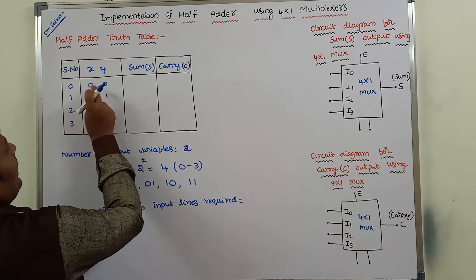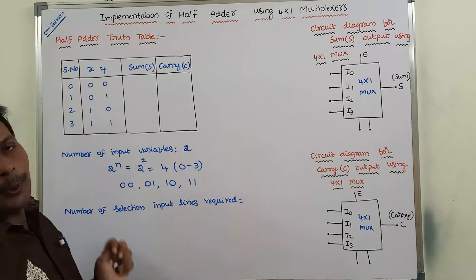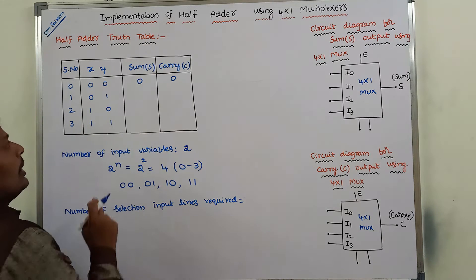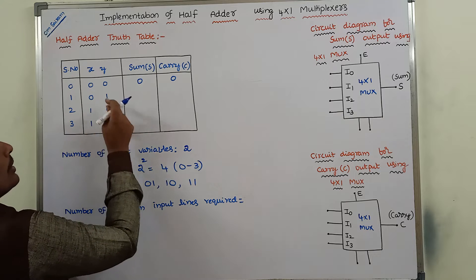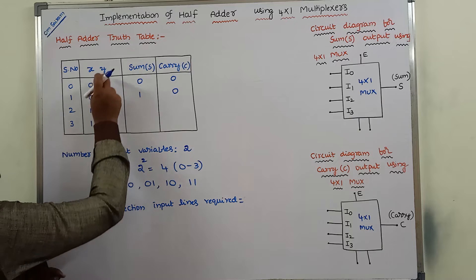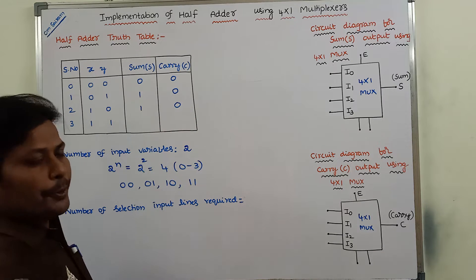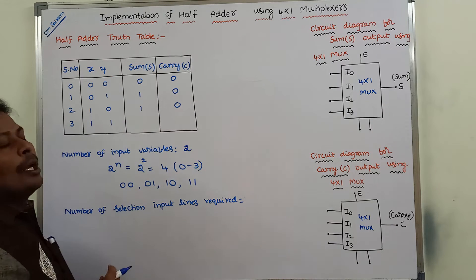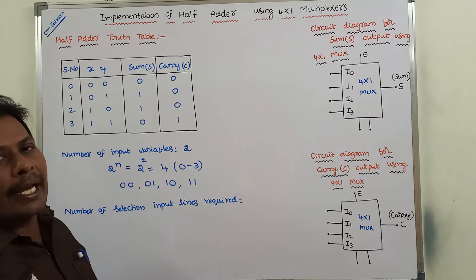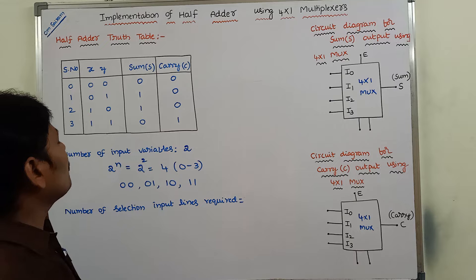Now we are adding these two bits. For X=0, Y=0: 0+0, sum is 0, carry is 0. For X=0, Y=1: 0+1=1, sum is 1, carry is 0. For X=1, Y=0: 1+0=1, sum is 1, carry is 0. For X=1, Y=1: 1+1=0 with carry 1, so sum is 0, carry is 1. These are the sum and carry output values for all 4 possible input combinations.